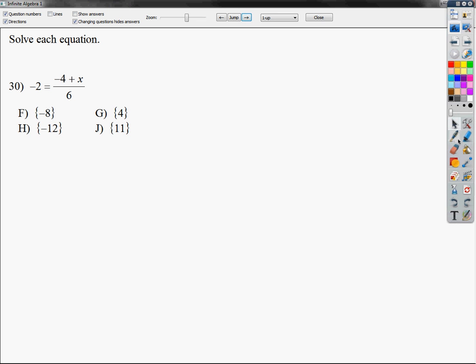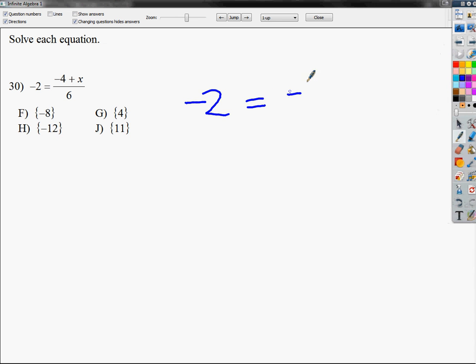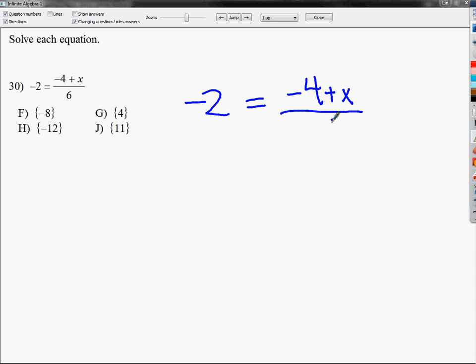Now number 30 is a little bit different. It looks very similar to the last one, but it's not exactly the same. Now in this one, as you can see, this entire term on the top is divided by 6. So I need to get rid of the divide by 6 just in order to move on. Because I'm trying to get x by itself, but in order to do so, I need to get that entire term off the top of that fraction. In order to get rid of divide by 6, I need to do times. Negative 2 times 6 is negative 12. Bring all this down.